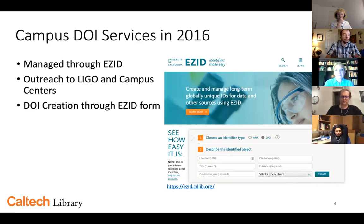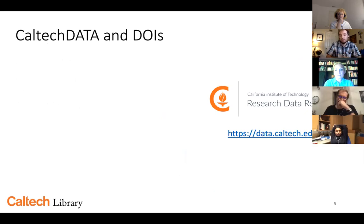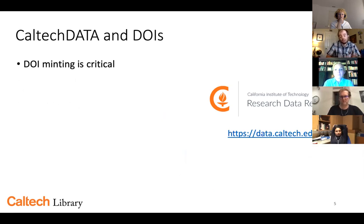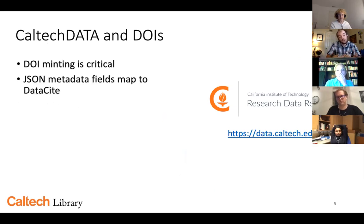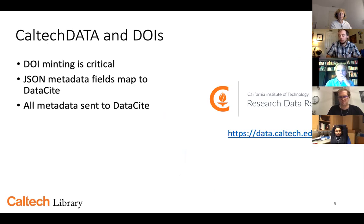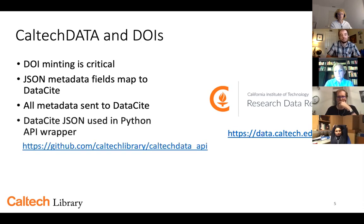It was really inefficient and we weren't getting particularly complete metadata records. When we launched Caltech Data, DOIs were a crucial component of the repository service — it's what researchers want, they need to fulfill their publisher or funder mandates. We have a self-service repository model where researchers provide the metadata and get their DOIs. Technically, the repository uses a JSON metadata model, which is very close to the DataCite schema. I worked hard with our development partner, Tind, to make sure all of our metadata gets sent to DataCite — when a record is created or edited, everything shows up on the DataCite side with the DOIs. I also use DataCite JSON in the Python API wrappers, so folks doing integrations can just work with DataCite JSON metadata.